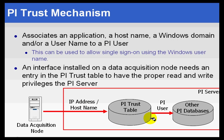Once we find you on the list, we give you the privileges of the PyUser you are associated with. We even have it set up so that if you match two items on the list — two connection credentials — there's a scoring system to determine which user you get connected as, or which Trust takes precedence.